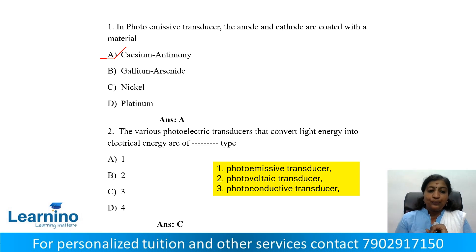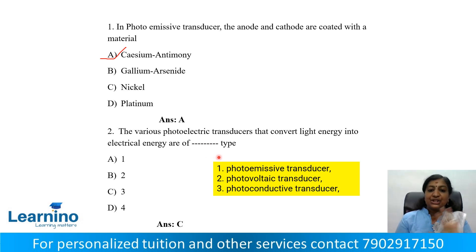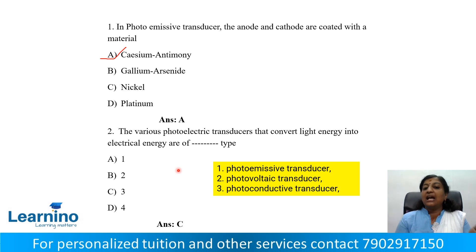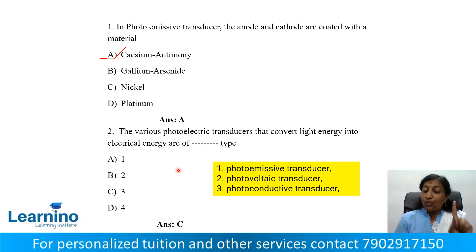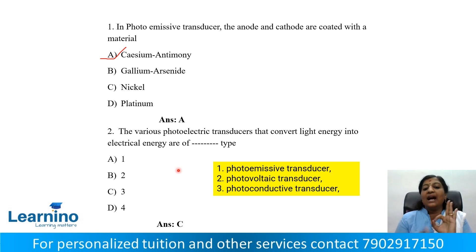Question number 2: The various photoelectric transducers that convert light energy into electrical energy are of how many types? There are 3 types: photoemissive transducers, photovoltaic transducers, and photoconductive transducers. So we can choose option C.